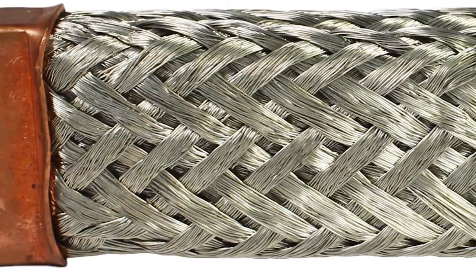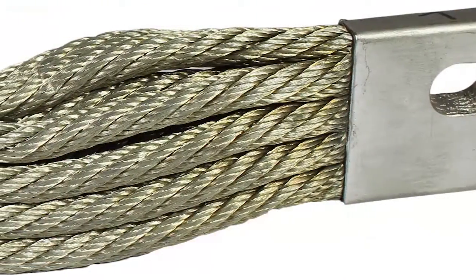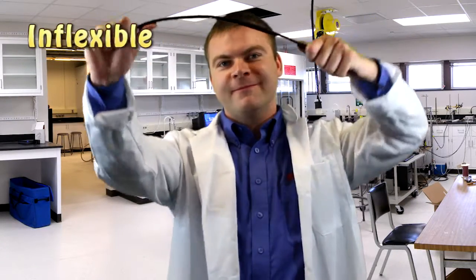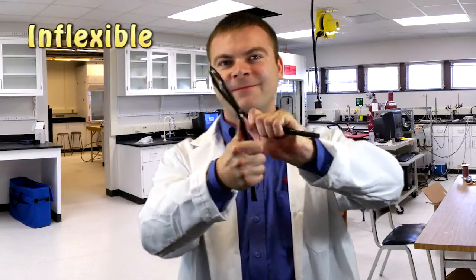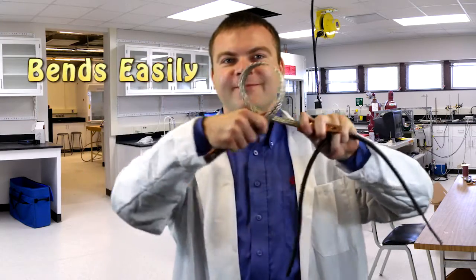Due to its very fine stranding, braid has the ability to bend in ways that most conductors cannot. For example, here's a piece of standard copper code conductor, and here is an AWG equivalent piece of braid. As you can see, the braid has the ability to change its shape much more easily than the copper code conductor.